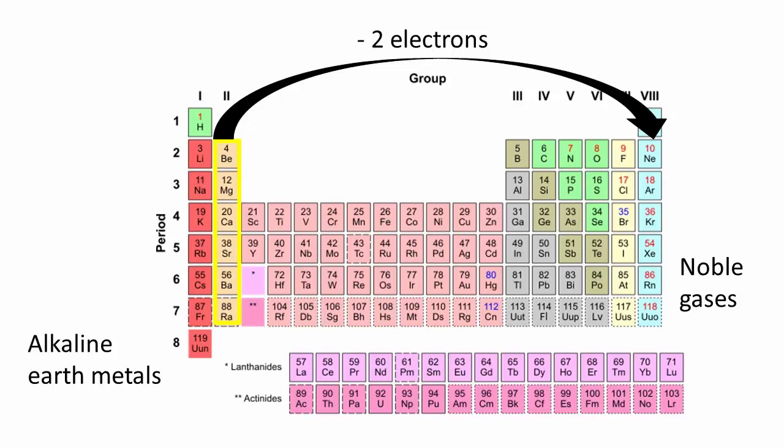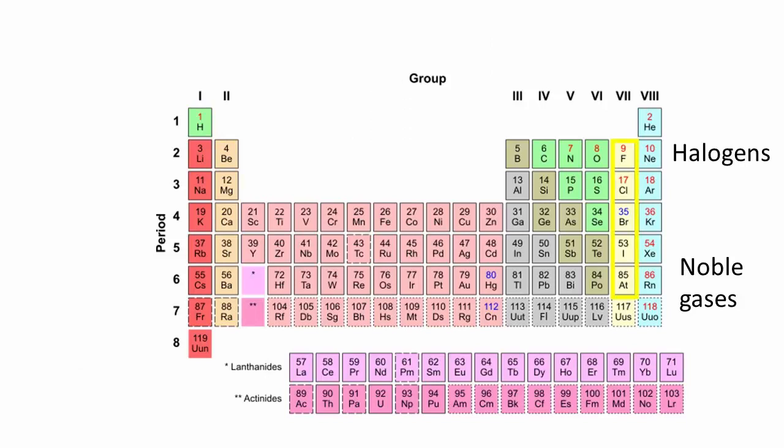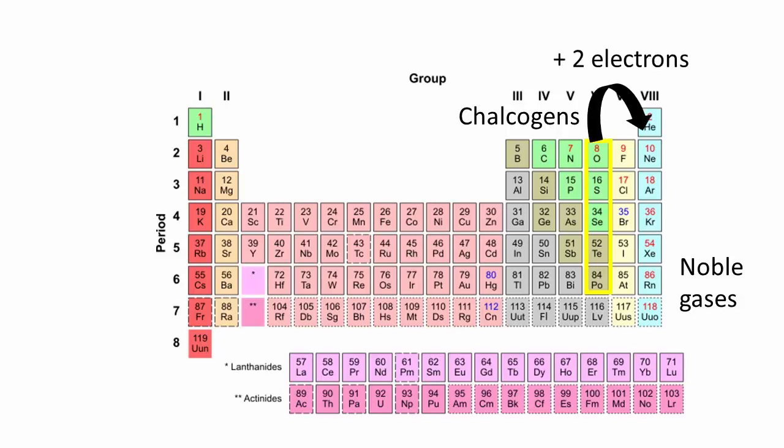On the right-hand side, losing the necessary number of electrons is not an option. However, gaining electrons to reach noble gas configuration becomes viable. Therefore, halogens such as fluorine and chlorine are well known for gaining a single electron, while chalcogens such as oxygen and sulfur gain two electrons.